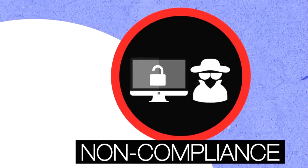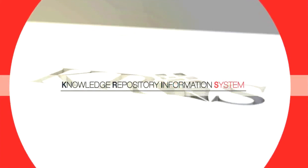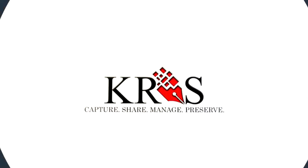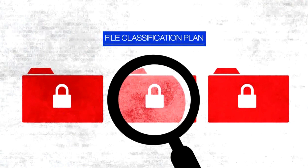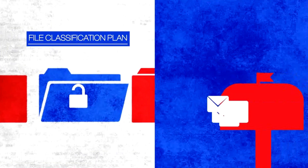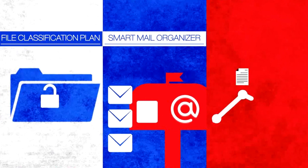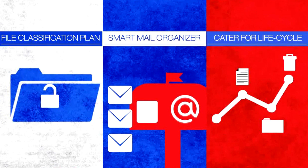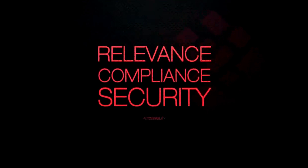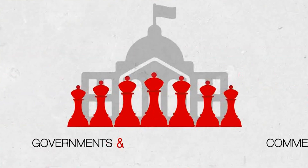The solution is CHRIS — the Knowledge Repository Information System. CHRIS will help you capture, share, manage, and preserve both electronic and paper documents for the entire record lifecycle. CHRIS gets files organized through a file classification plan and role-based organization chart to ensure relevant people file and access relevant documents. It saves important emails and attachments using a smart mail organizer, caters for the entire document lifecycle from creation to disposal, and complies with standards. In short, CHRIS ensures relevance, compliance, security, and accessibility — trusted and proven by governments and many commercial organizations.